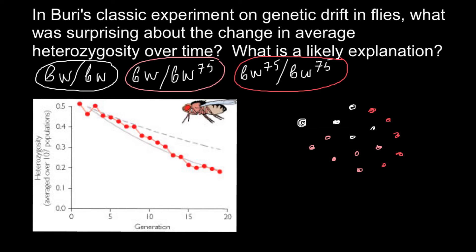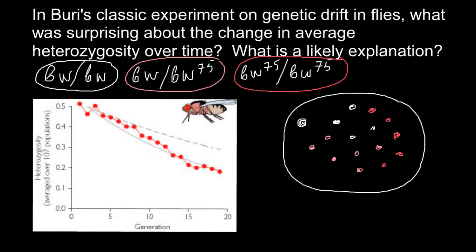We also have flies homozygous for the BW75 alleles, whose eye color would be red. Altogether, the first generation had 16 flies. We can call this the gene pool, because each color represents some genotype. The question is: why were the experimental data different from predicted, and why was the decline more steep?